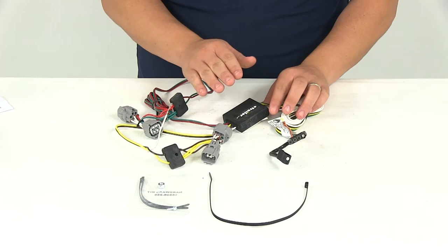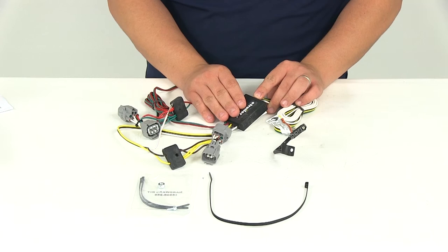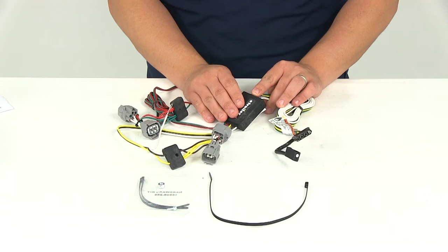Now, the tail light converter: Because most trailers run on a two-wire system, the separate brake and turn signals from your vehicle's three-wire system need to be combined so they are compatible with the wiring system of your trailer.